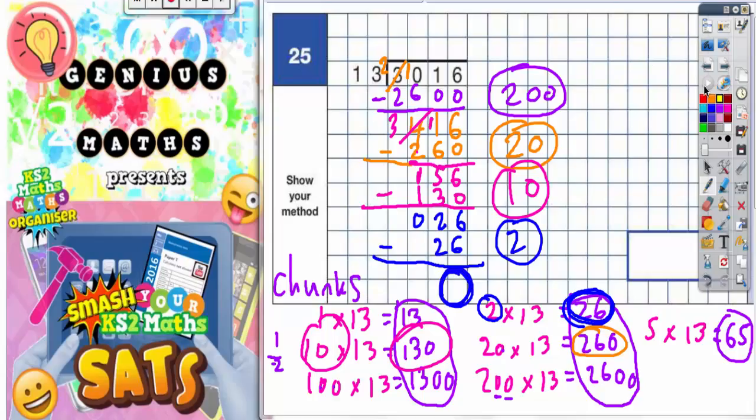Once I get down to 0, which I have, I need to add up all of my chunks. So I've got 200 lots, 20 lots of 13, 10 lots of 13, and 2 lots of 13. Altogether, this is 200 plus 20 is 220, plus 10 is 230, plus 2 is 232. So altogether, it's 232 lots of 13. So your final answer is 232 lots.